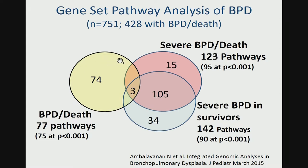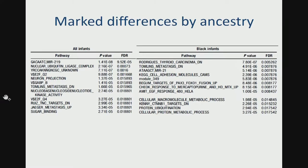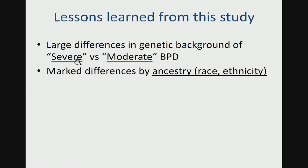When you look at any BPD or death at 36 weeks — that's basically moderate to severe BPD — versus severe BPD or death, you see very little overlap between the two. The genomic predictors of moderate BPD are very different from those for very severe BPD. The pathways that are important are also very different when you consider all infants together versus Black infants versus White infants, so there are marked differences by ancestry. From this study, we identified large differences in the genetic background of severe versus moderate BPD, and marked differences by ancestry.